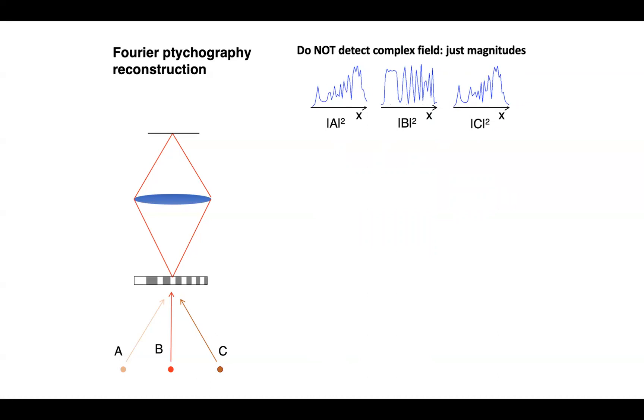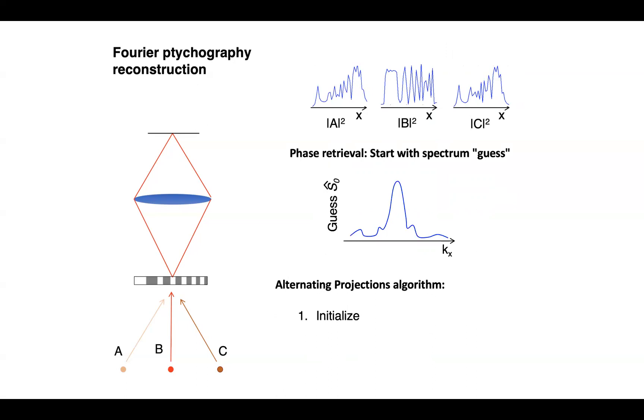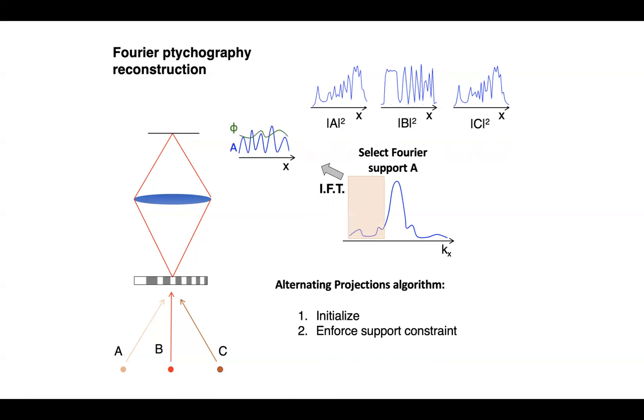And the way we do that is with a nonlinear algorithm. And so just like any nonlinear algorithm, we're going to start with a guess or an initial guess. The approach that we'll use is based on a methodology called phase retrieval, which naturally is going to recover the missing phase from our intensity-only measurements. So after we initialize our guess, which you'll note here is in the Fourier domain, it's the sample spectrum s-hat-0, we'll then proceed to simulate an image.